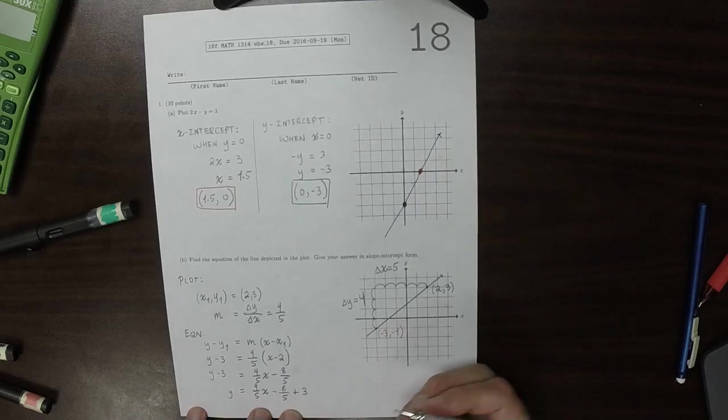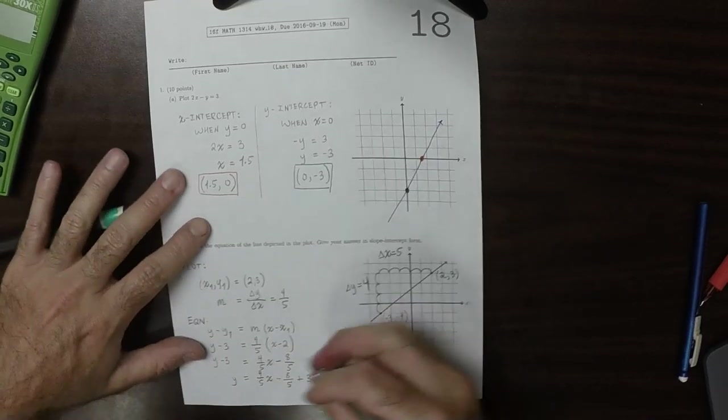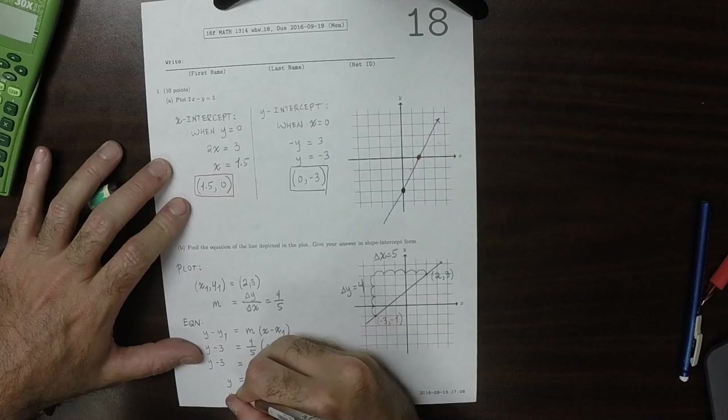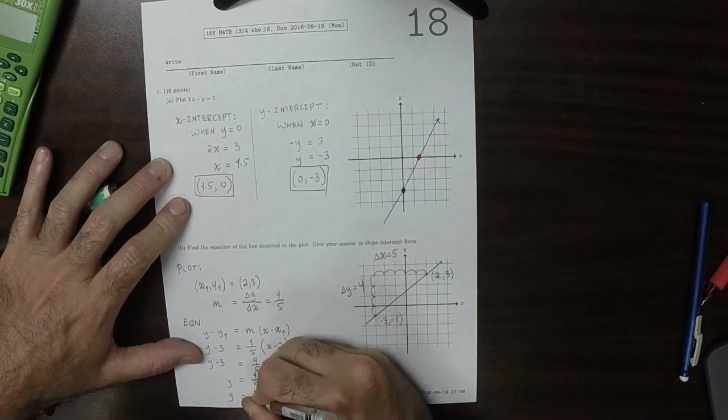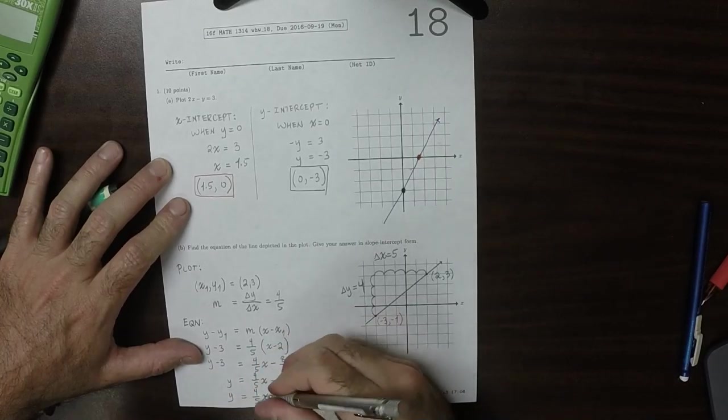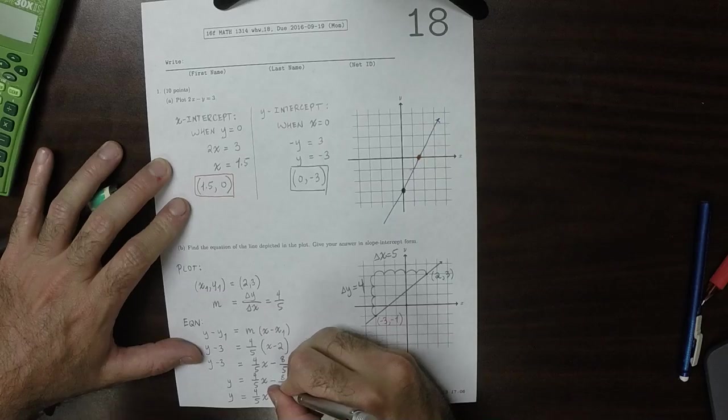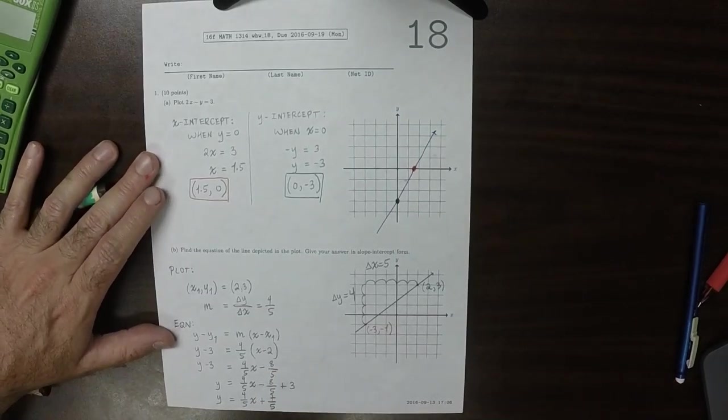So 15 minus 8 fifths. So 15 minus 8 is 7, so there would be 7 fifths. So that would be y is 4 fifths x plus 7 fifths. And that's the answer.